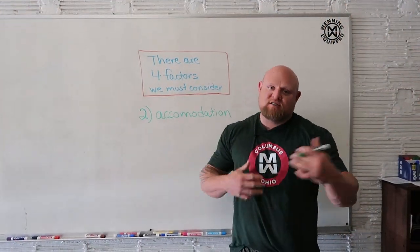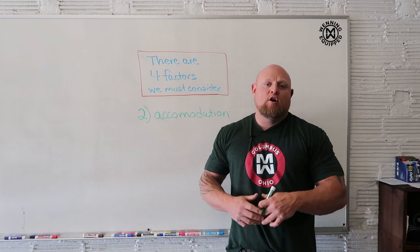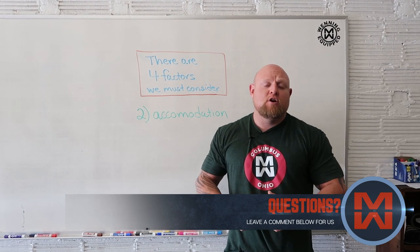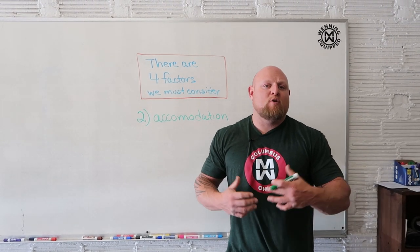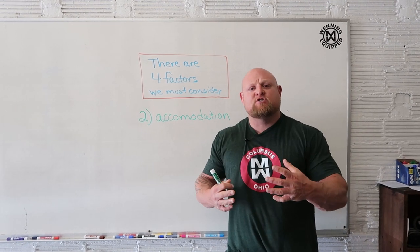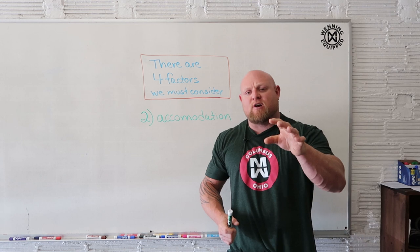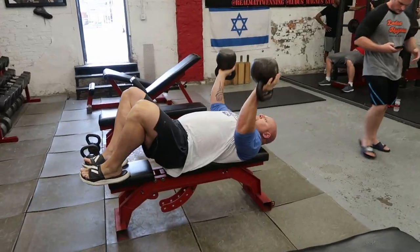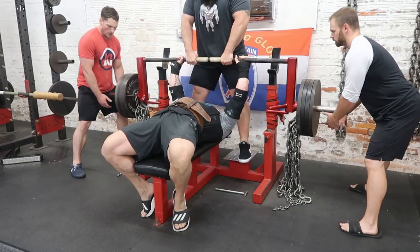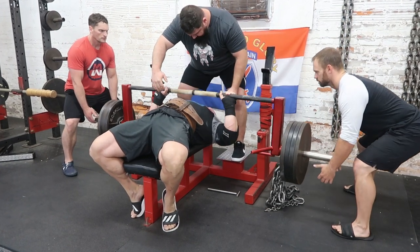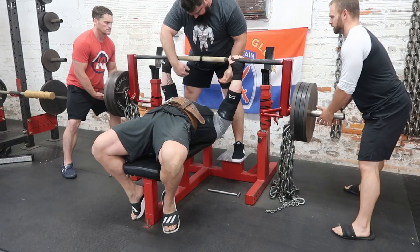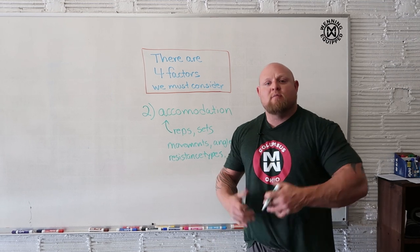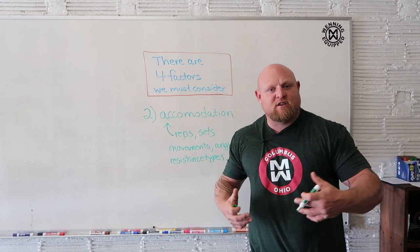The next big thing is accommodation. This is a huge law of training that I follow — the law of accommodation. This states that if you use the same stimulus, or as we've learned, the same magnitude too often, the body's going to recognize the stimulus and therefore the percentage by which it gets better from that specific type of training will be less. In accommodation, we have to remember that reps, sets, movements, angles, and resistance types all matter. If we use the same reps, sets, movements, angles, or resistance types, the body's going to get used to it and it'll be a less and less powerful stimulus.